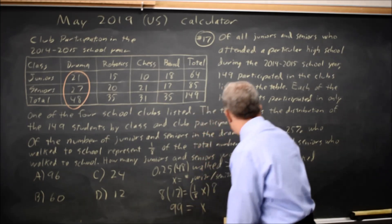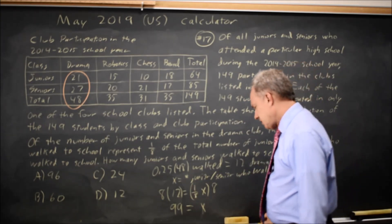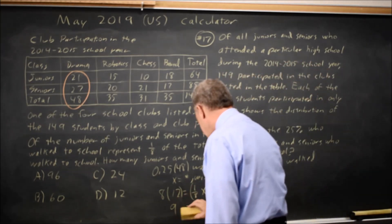How many juniors and seniors walked to school would be x? I said 96, my child wrote 99.